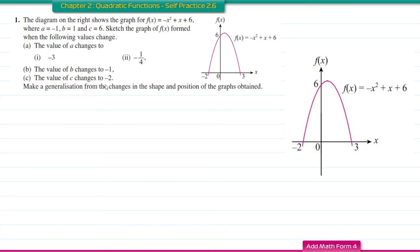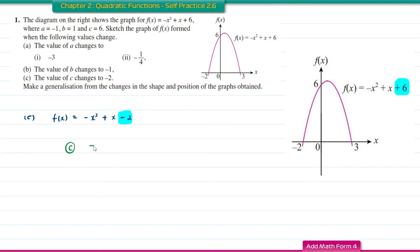Question c: the value of c changes to -2, so the graph we want to sketch is f(x) = -x² + x - 2. These two functions have the same values of a and b, therefore the shape of the graph is unchanged. The change in c only affects the vertical position — moving the graph vertically upwards or downwards. Since c changes from +6 to -2, the graph moves vertically downwards, and the y-intercept will be at -2.